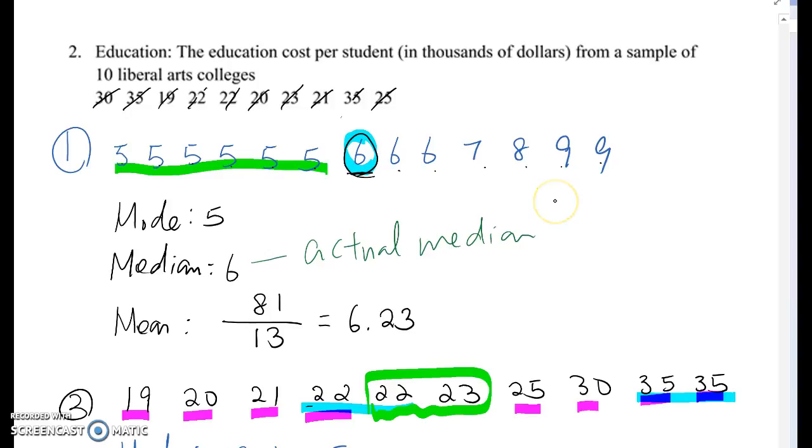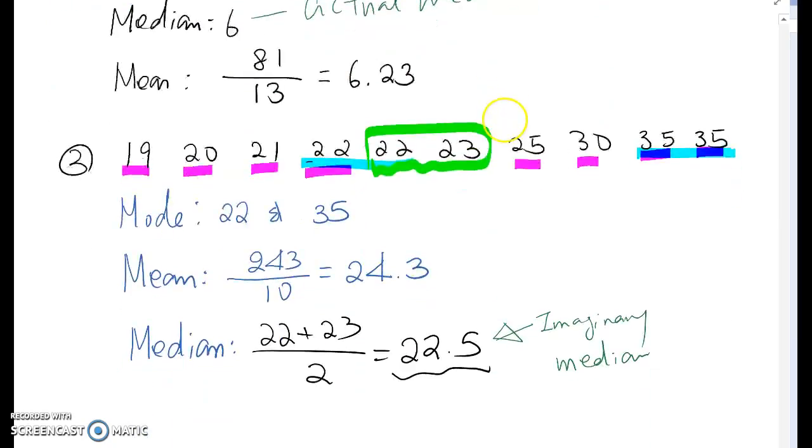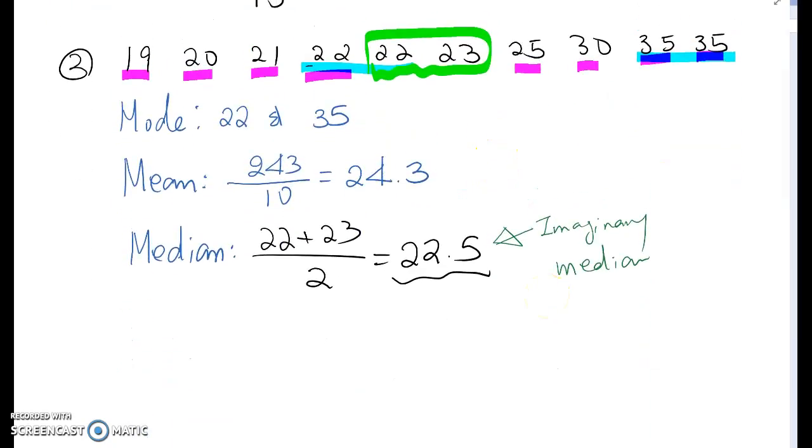So please remember, if total data entry is odd number, you can actually see actual median value. However, if data entry is even number, then you won't see actual median value. Therefore, you need to find imaginary median value. Then, how to find it? You need to find mean of two middle entry values. So in this case, we choose 22 and 23, because they are the two middle values, and find their mean value.